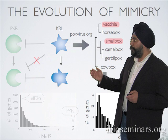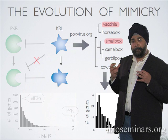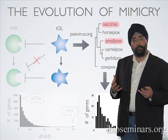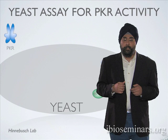What makes this arms race really interesting is that both K3L and PKR are evolving to get the attention of EIF2-alpha, which is not changing at all. That is what makes the problem of mimicry really interesting from an evolutionary standpoint.